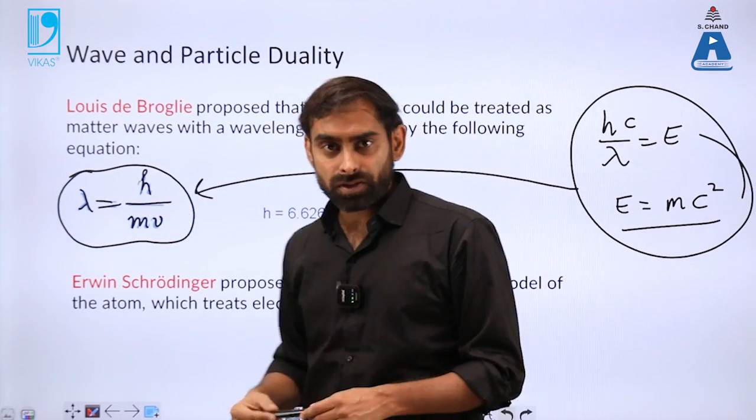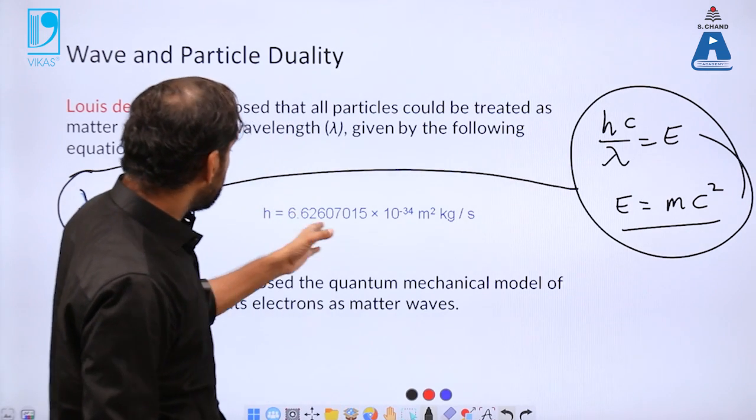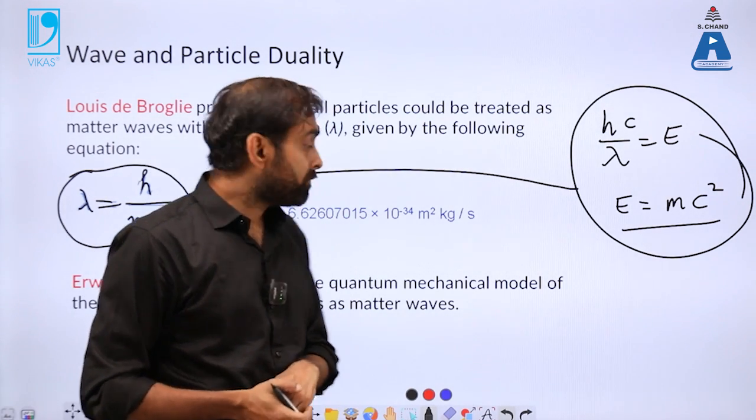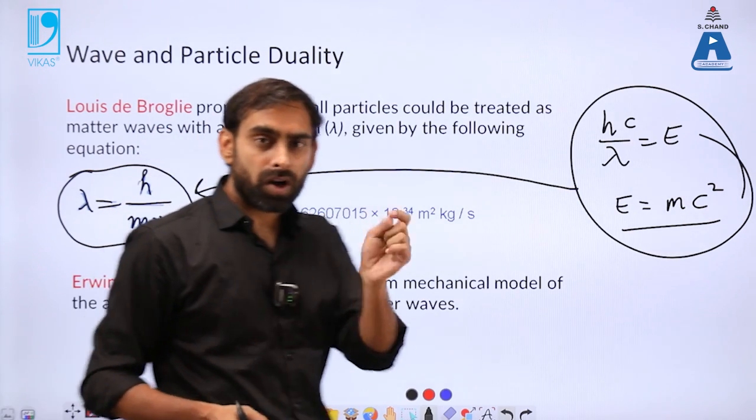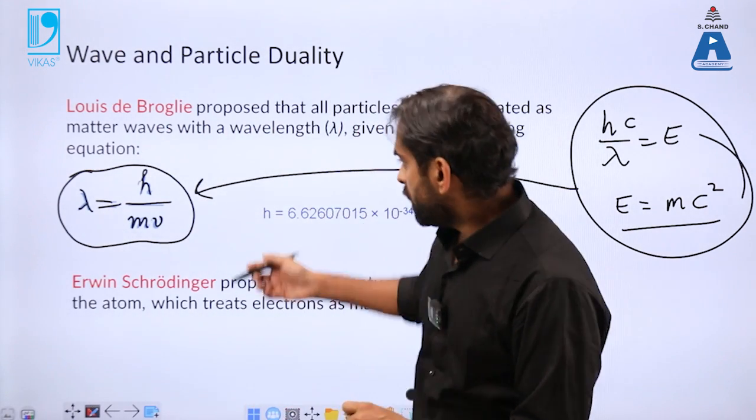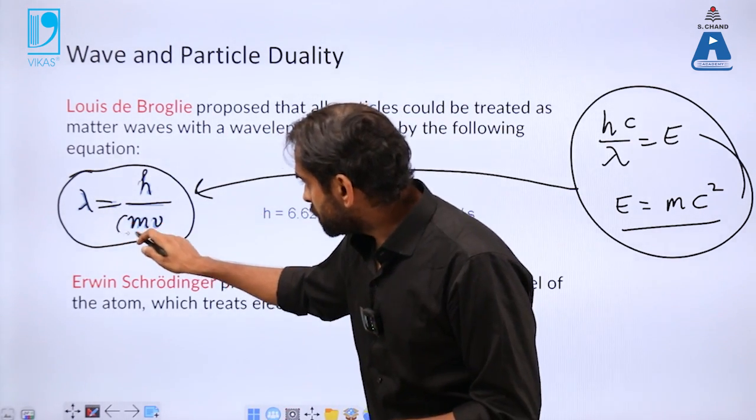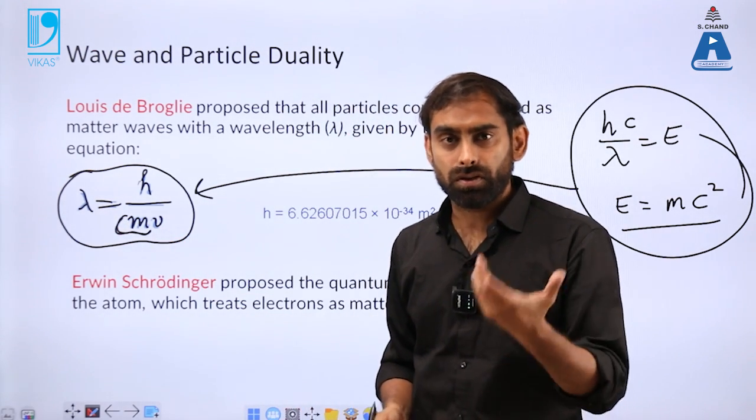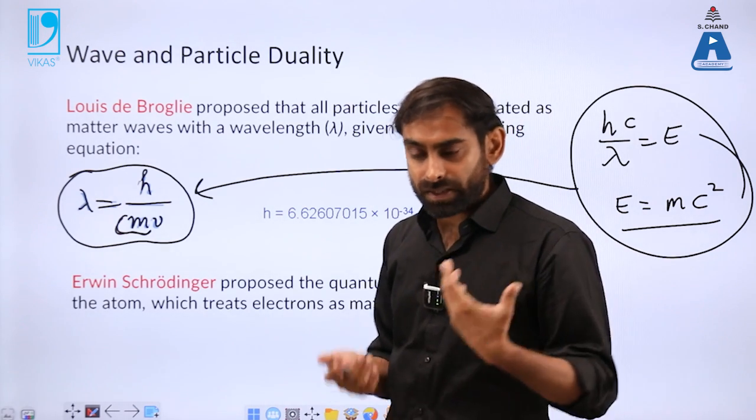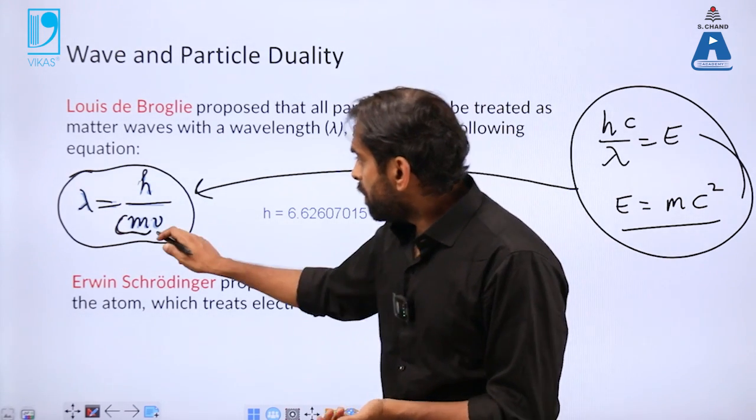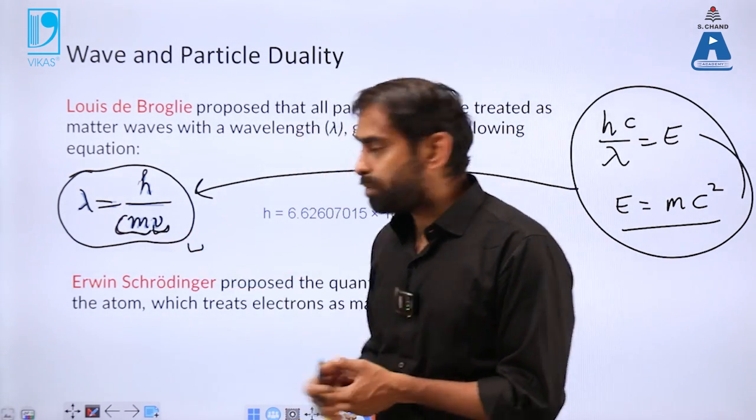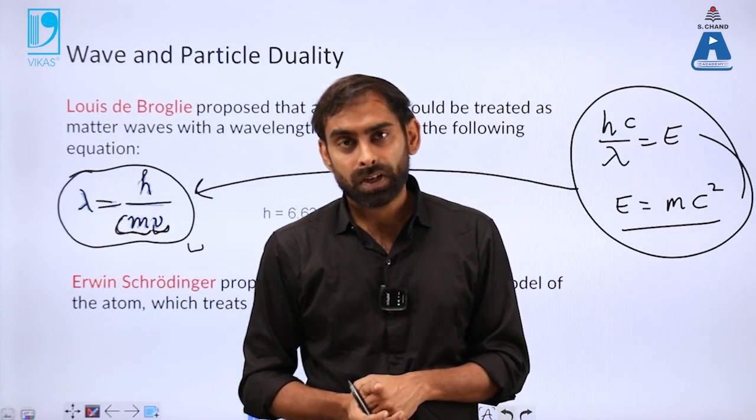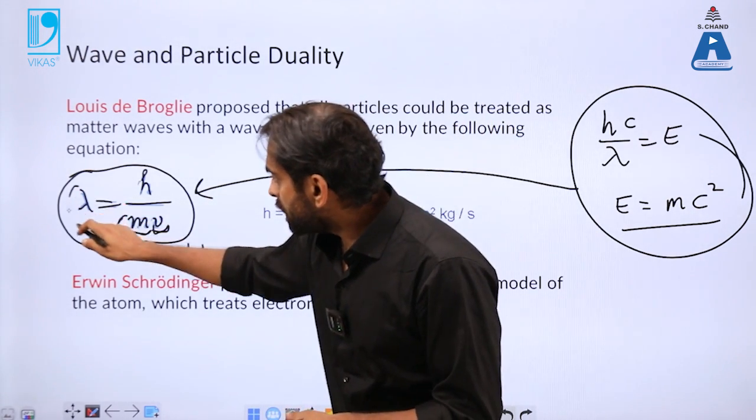h, which is Planck's constant, has a value of 6.6 × 10⁻³⁴, which is quite a small number. And if you take a matter which is a bit small, like neutrons, protons, electrons, which have negligible mass but move at enormously fast velocities.